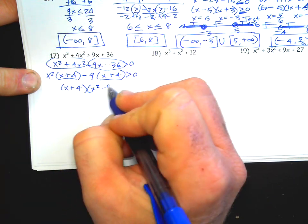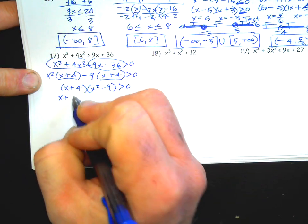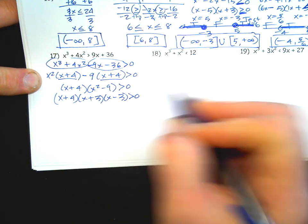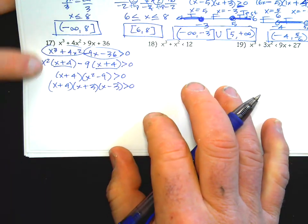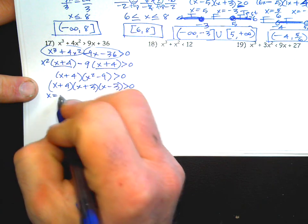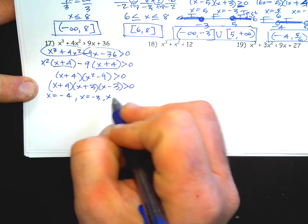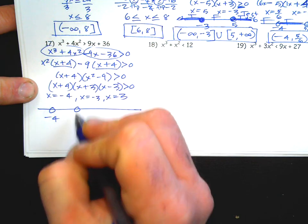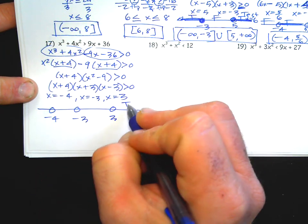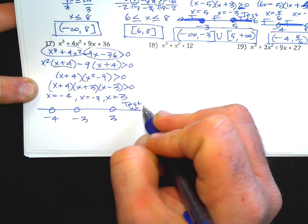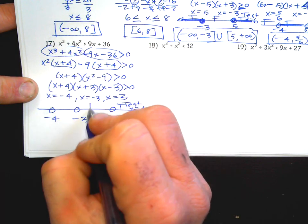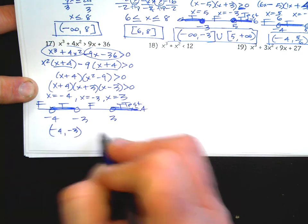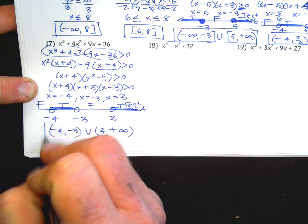If you get the same binomial inside both groups, you can factor that out of the whole thing, leaving x squared minus nine. You can then continue to factor using difference of squares: x plus three times x minus three. So the roots are x equals negative four, x equals negative three, x equals positive three. No even powers, open dots. Test x equals four: positive times positive times positive is true, false, true, false. Answer: negative four to negative three, parentheses, union three to positive infinity.